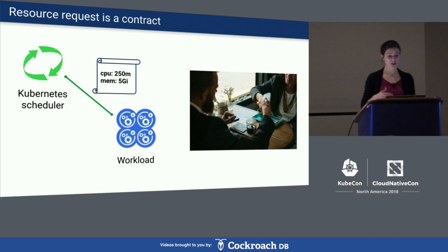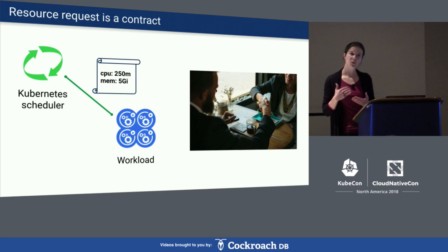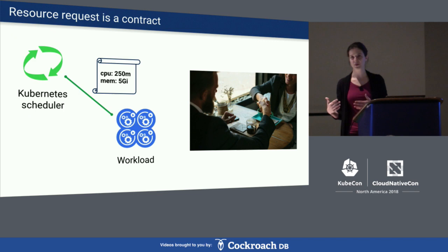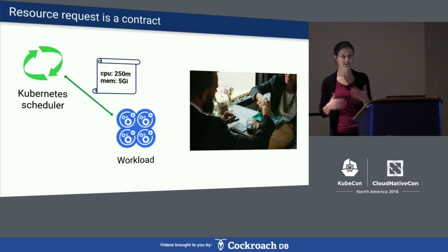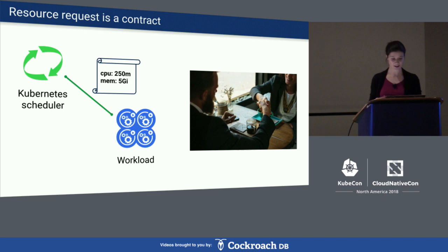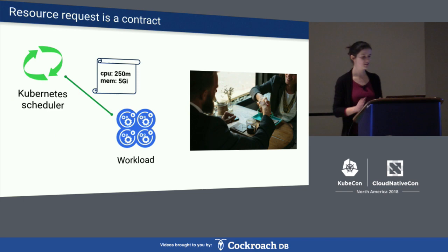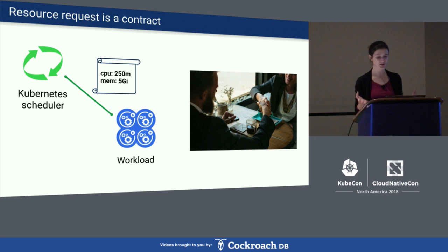The resource request is actually a contract — a contract between your workload and the Kubernetes scheduler. The resources that you request are guaranteed to be reserved for your workload, provided that they are available in the cluster. Kubernetes scheduler promises never to put your workloads on a node that doesn't have those resources available. On the other side, if there is no such place currently available, the scheduler will not schedule your pod anywhere.